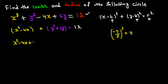The coefficient of X² must be 1 before completing the square — it already is here. Whenever you add a value to the left side, you must add the same value to the right side. So add 4 to both sides.